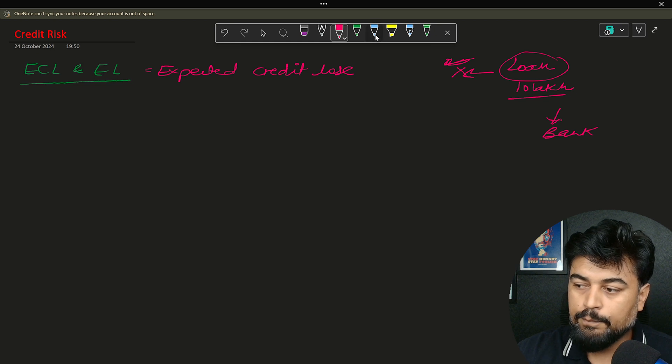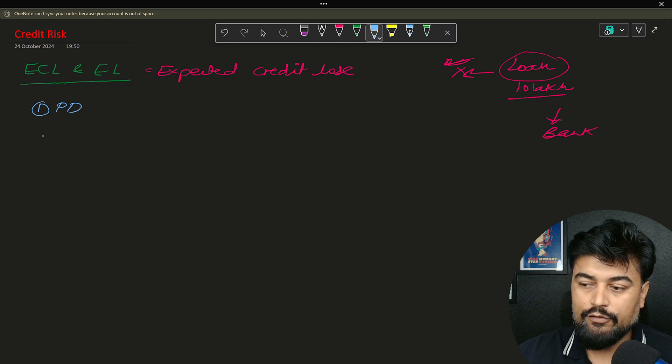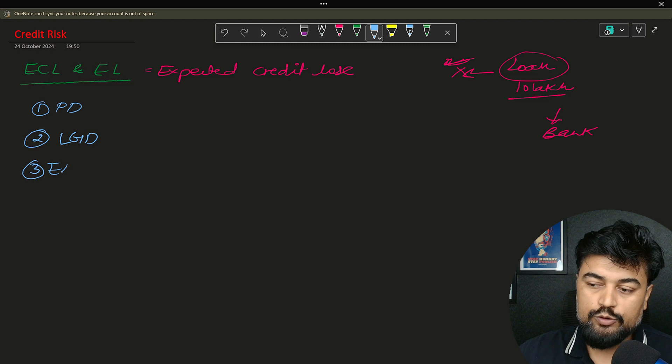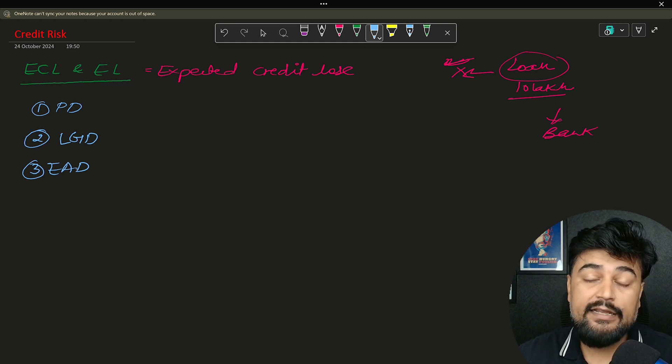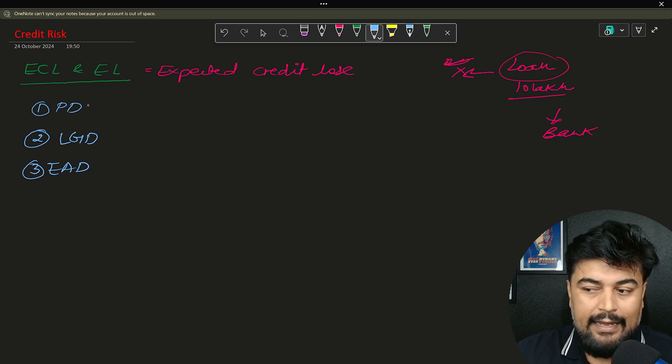Now there are some important components of expected credit loss. And those are probability of default called PD, loss given default LGD, and exposure at default. So in all the analytics companies and in the banks, you will see that there are models on the basis of PD, LGD, EAD. Now you can build any model.